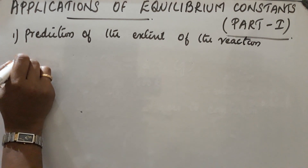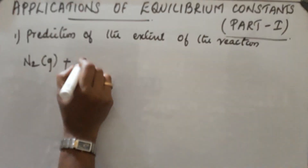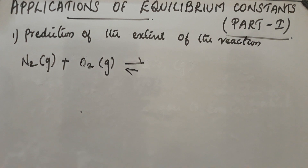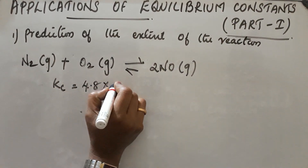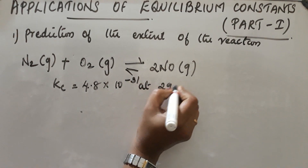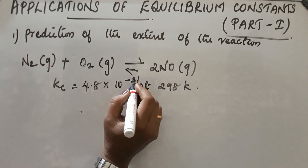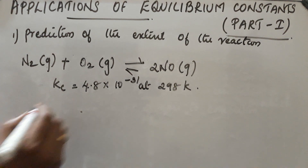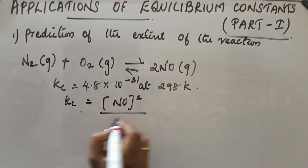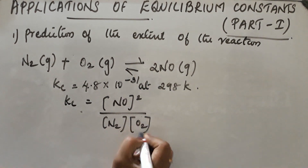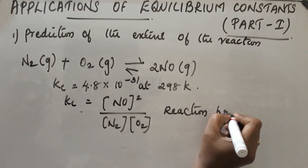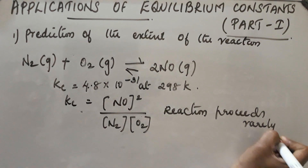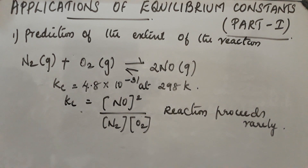Another example: N₂(g) + O₂(g) → 2NO(g). Here Kc is found to be 4.8×10⁻³¹ at 298 K. Since Kc is very, very small, Kc equals concentration of product by concentration of reactant, and since the value is very small, less product is obtained. The forward reaction takes place very slowly, and the reaction proceeds rarely.